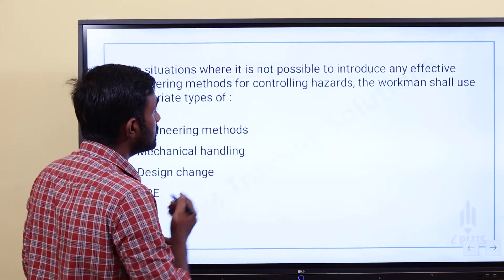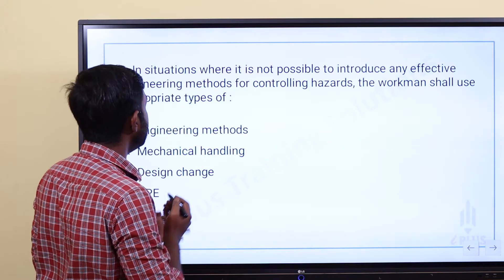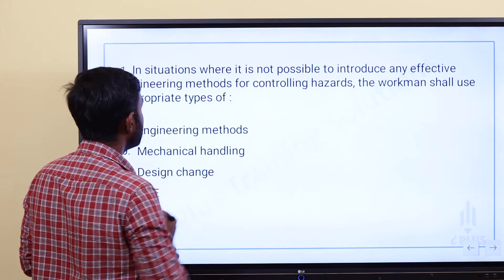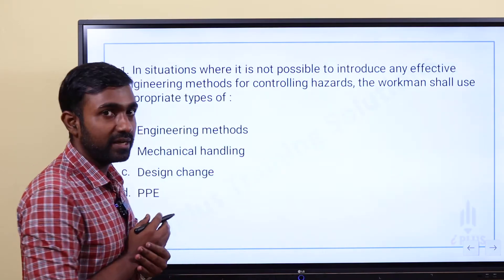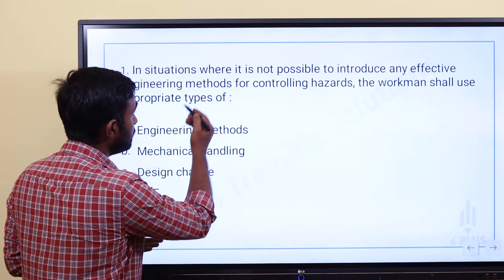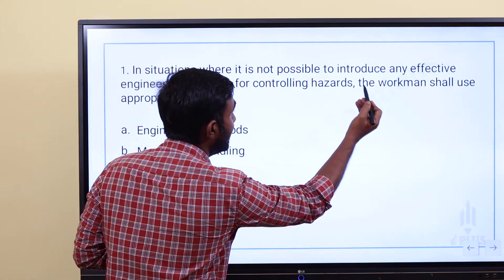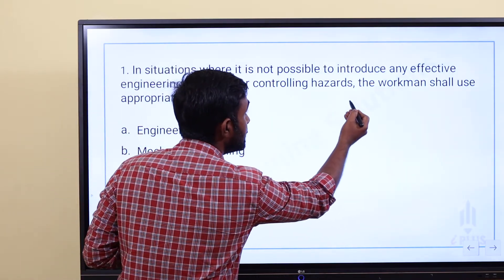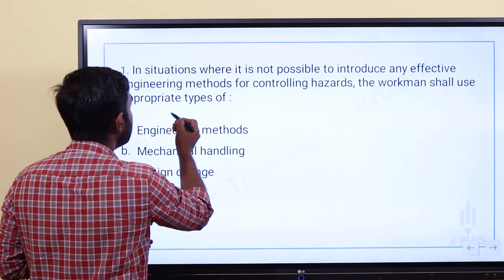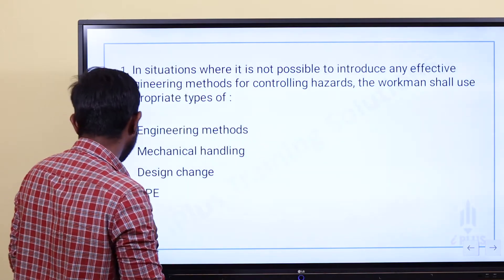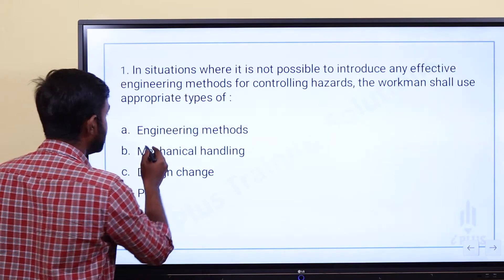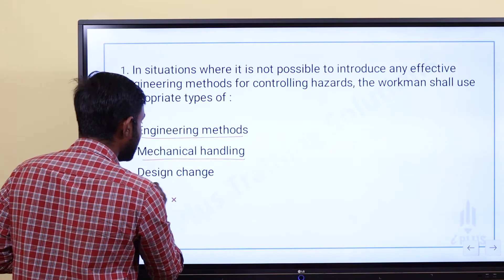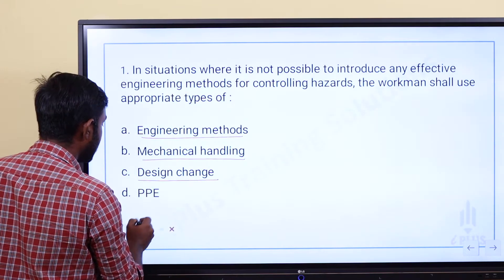In situations where it is not possible to introduce any effective engineering methods for controlling hazards, the workmen shall use appropriate types of — Option A: Engineering Methods, Option B: Mechanical Handling, Option C: Design Changes, Option D: PPE.